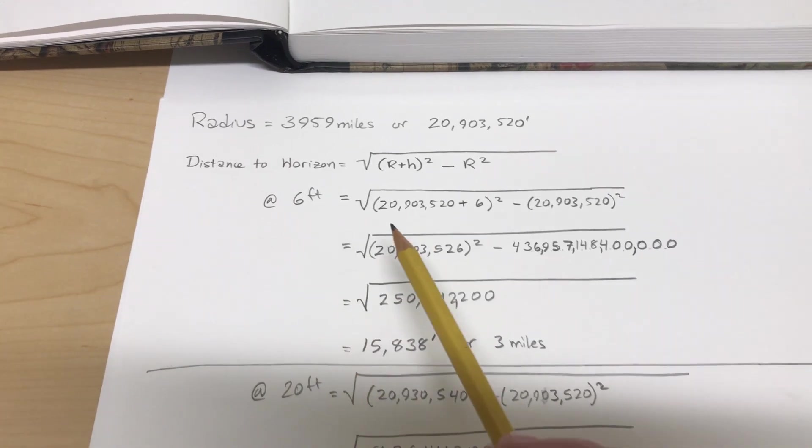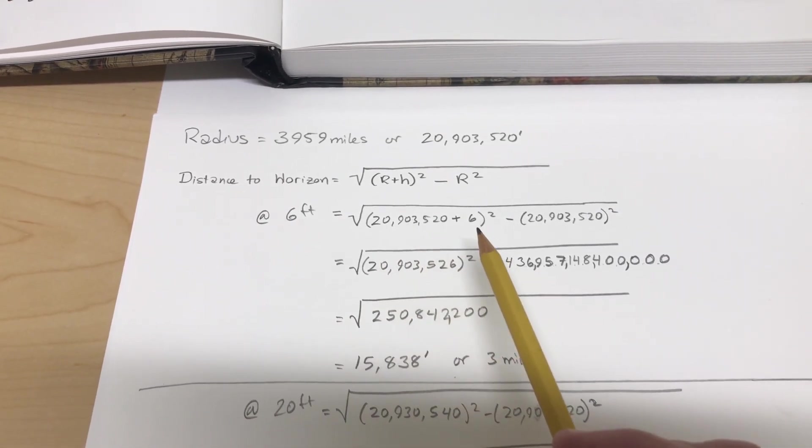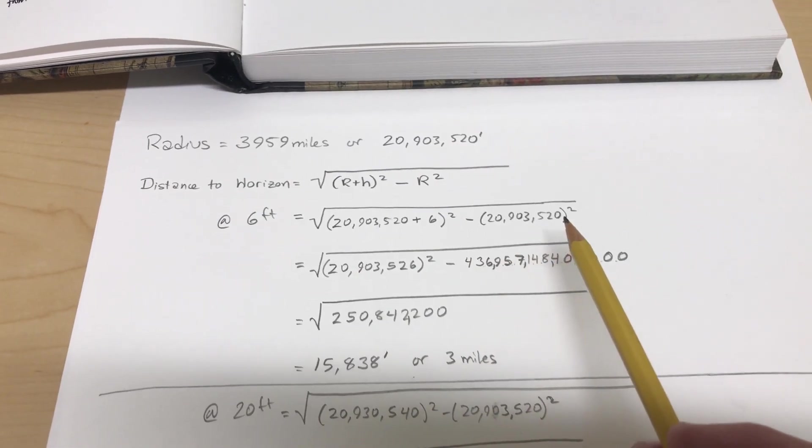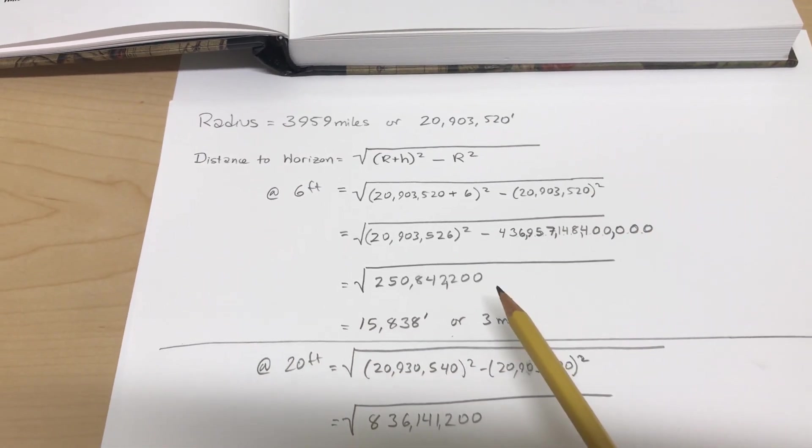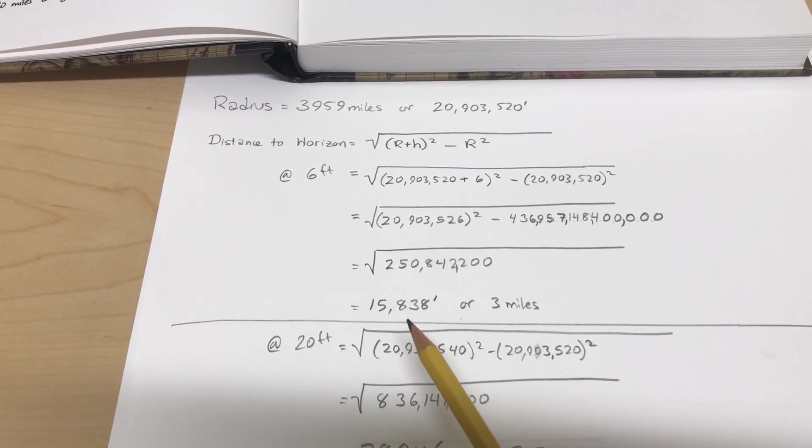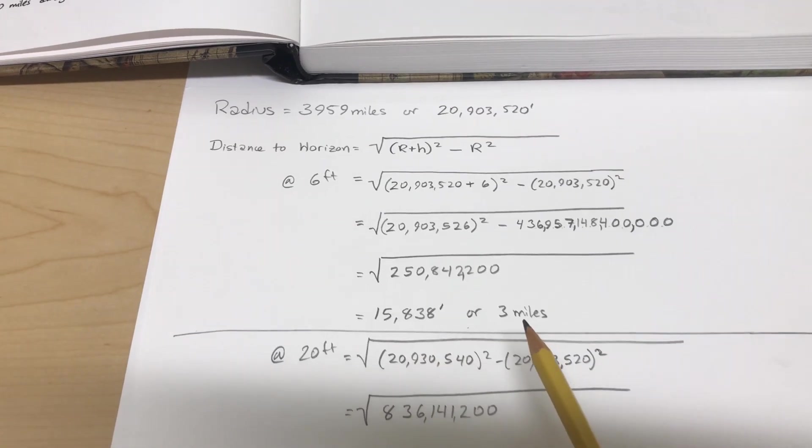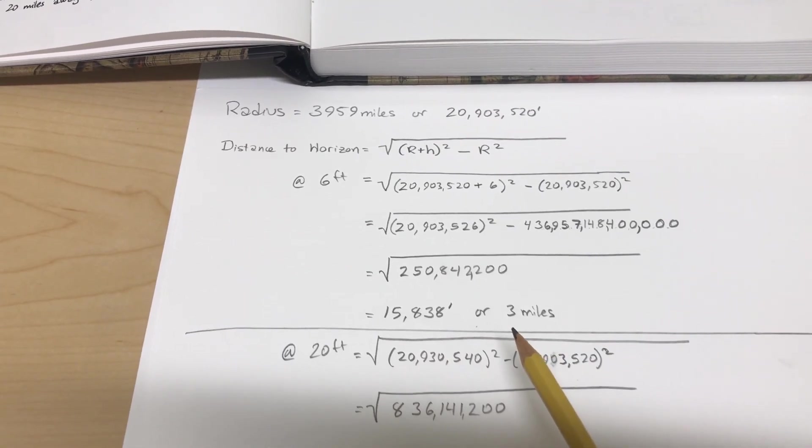And then at 6 feet, that becomes √((20,903,520 + 6)² - 20,903,520²). And that becomes this number, and then we get down to the square root of this. It's 15,838 feet or 3 miles. One significant digit's fine at the end.